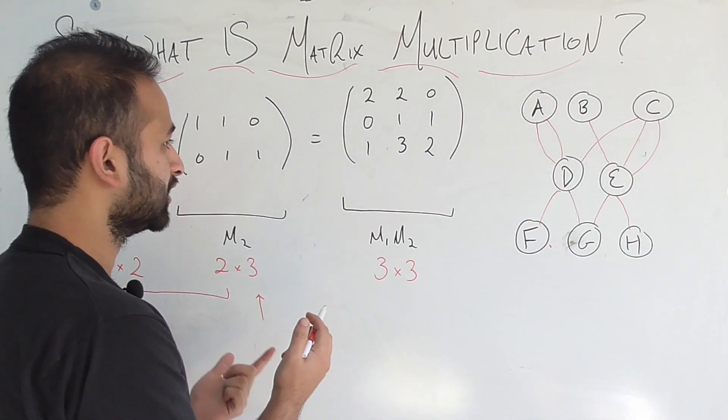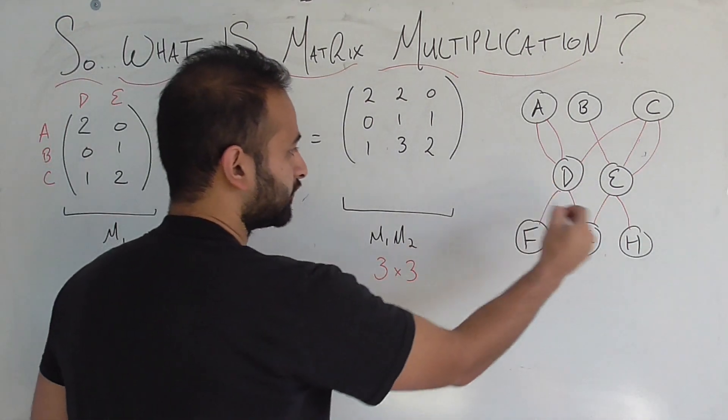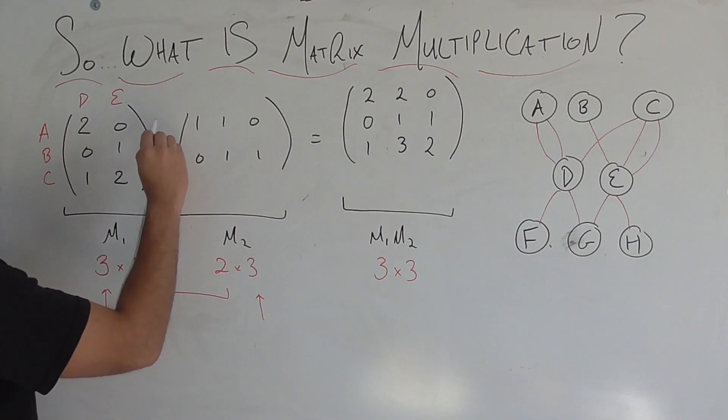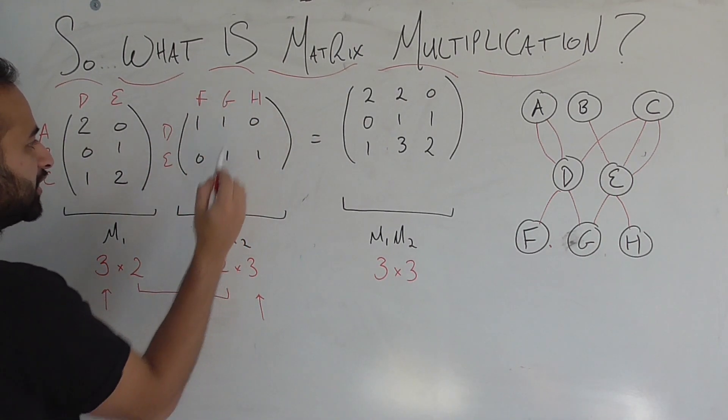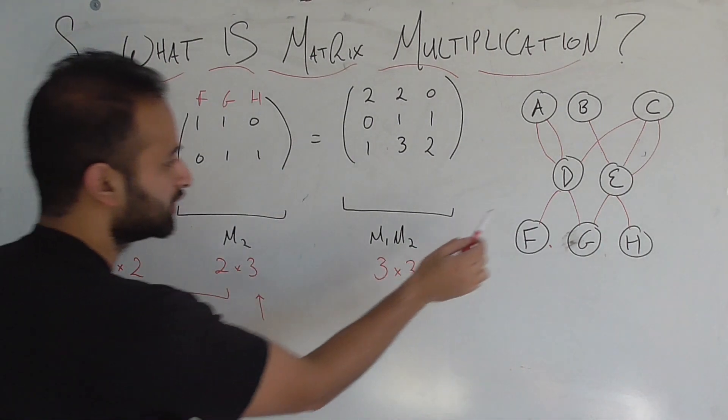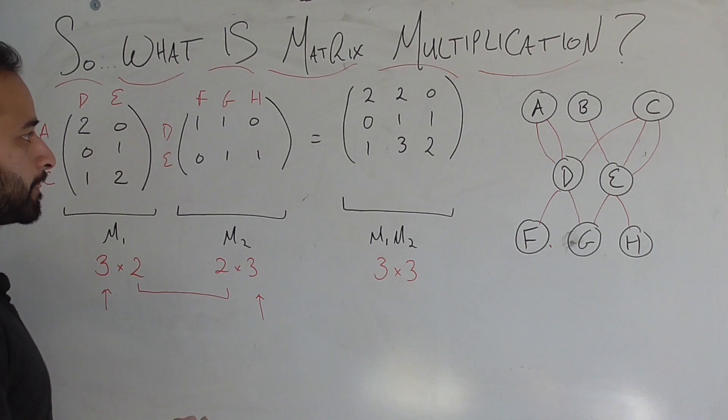Now as you might see coming up, the second matrix is going to be encoding the second part of this picture, the number of ways to get from your layover cities to the destination cities you want to get to. So here we'll put D and E, and then F, G, H. Again, verify there's one way to get from D to G, correct, and we can verify all four routes in the same way.